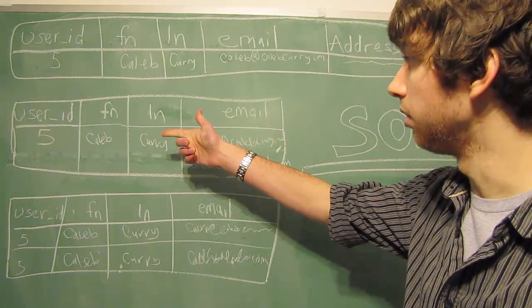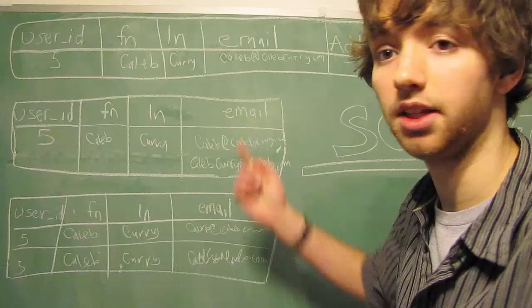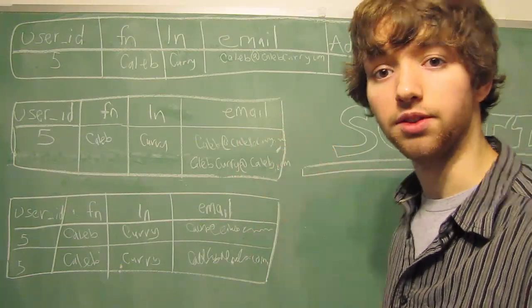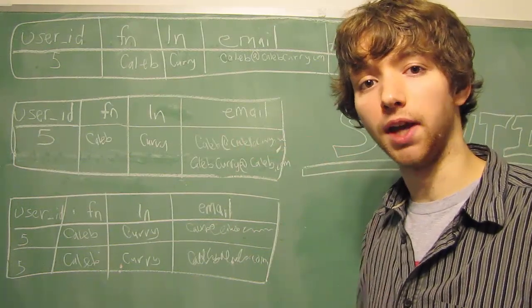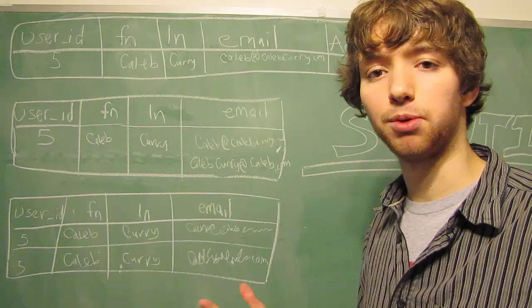This example, you can see we have one row with a user ID, first name, last name, and email. But if you look closely, we have two emails. These emails were entered together as one individual value. So you can think of maybe on a website,